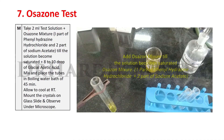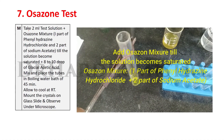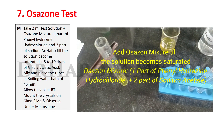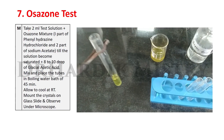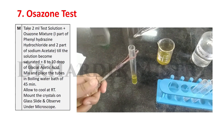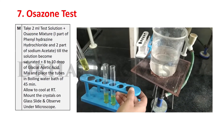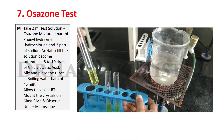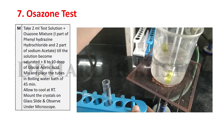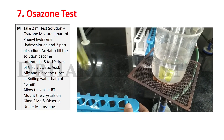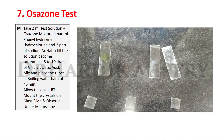Method: Take 2 ml test solution. Add osazone mixture, which contains 1 part of phenyl hydrazine hydrochloride and 2 parts of sodium acetate, until the solution becomes saturated. Add 8 to 10 drops of glacial acetic acid. Mix well and place the tubes in a boiling water bath for 45 minutes. After 45 minutes, allow test tubes to cool at room temperature. Mount the crystals on a glass slide and observe under the microscope.